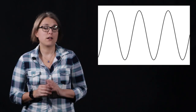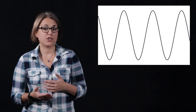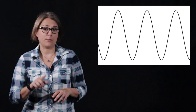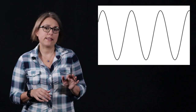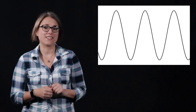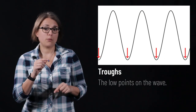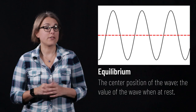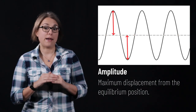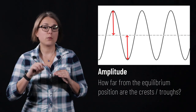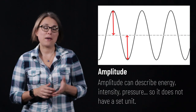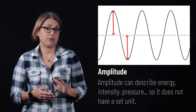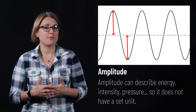Let's take a look at a graph of one type of representative wave. This graph shows the amount of energy, intensity, or some other related quantity of the wave as it travels. As it moves through space, it oscillates up and down in a rhythmic manner. Each of the high points on the wave is known as a crest. The low points of the wave are troughs, and the center position is known as the equilibrium value — the value of the wave if it were at rest. Wave amplitude describes the maximum displacement from the equilibrium position; in other words, how far away from equilibrium are the crests and troughs. Depending on the wave, the amplitude could describe energy, intensity, or even just height, so we will not necessarily define one particular unit for amplitude.